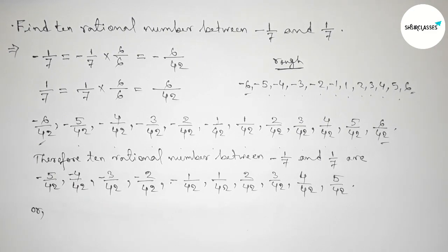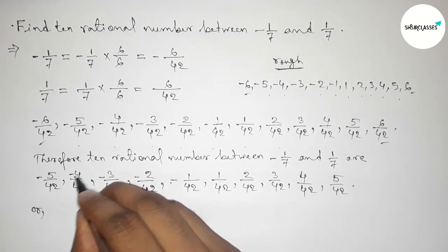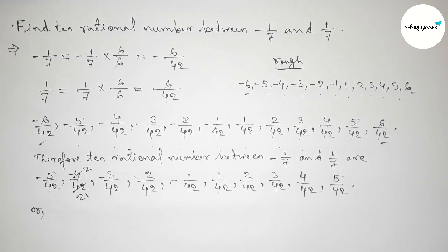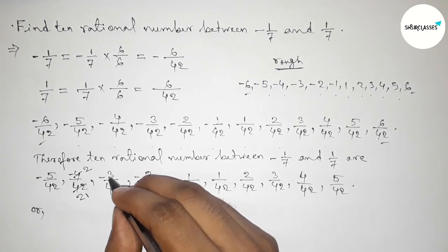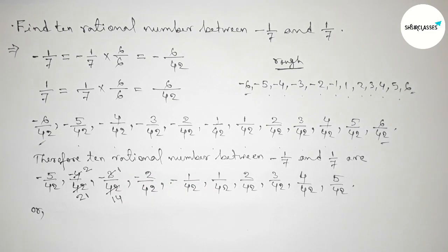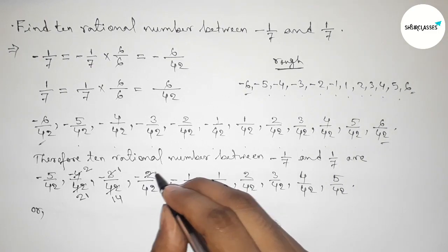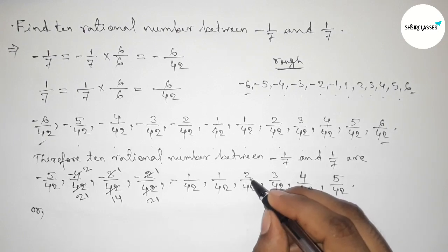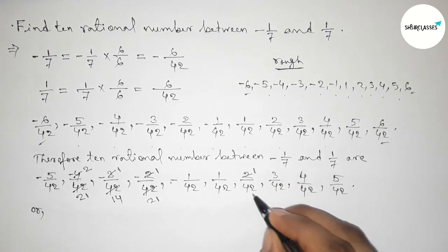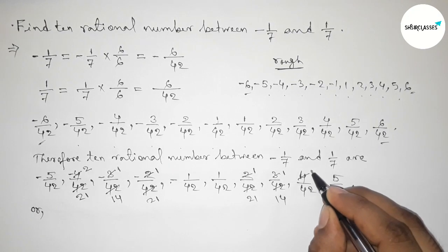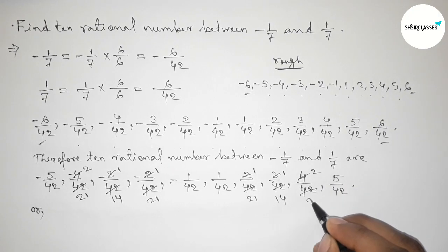If you divide both numerator and denominator by 2, you get results like 1 by 21 and 1 by 42. Again dividing both numbers by 3, you get 1 by 14 and 3 by 42. Dividing both numbers by 2 again gives 1 by 21 and similar simplifications.